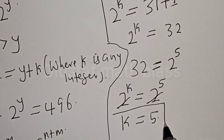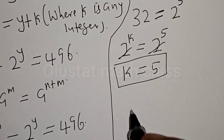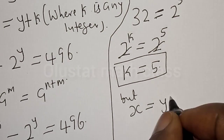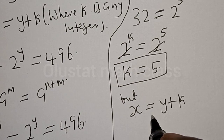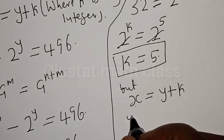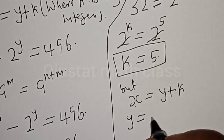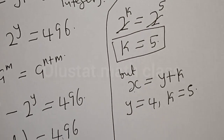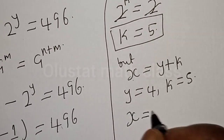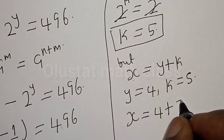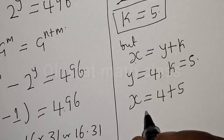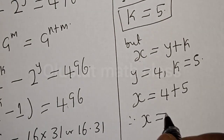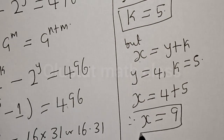We've gotten the value of k to be equal to 5. But x is equal to y plus k, and we want to find the value of x. We know y is equal to 4 and k is equal to 5. Therefore, x is equal to 4 plus 5, which is 9.